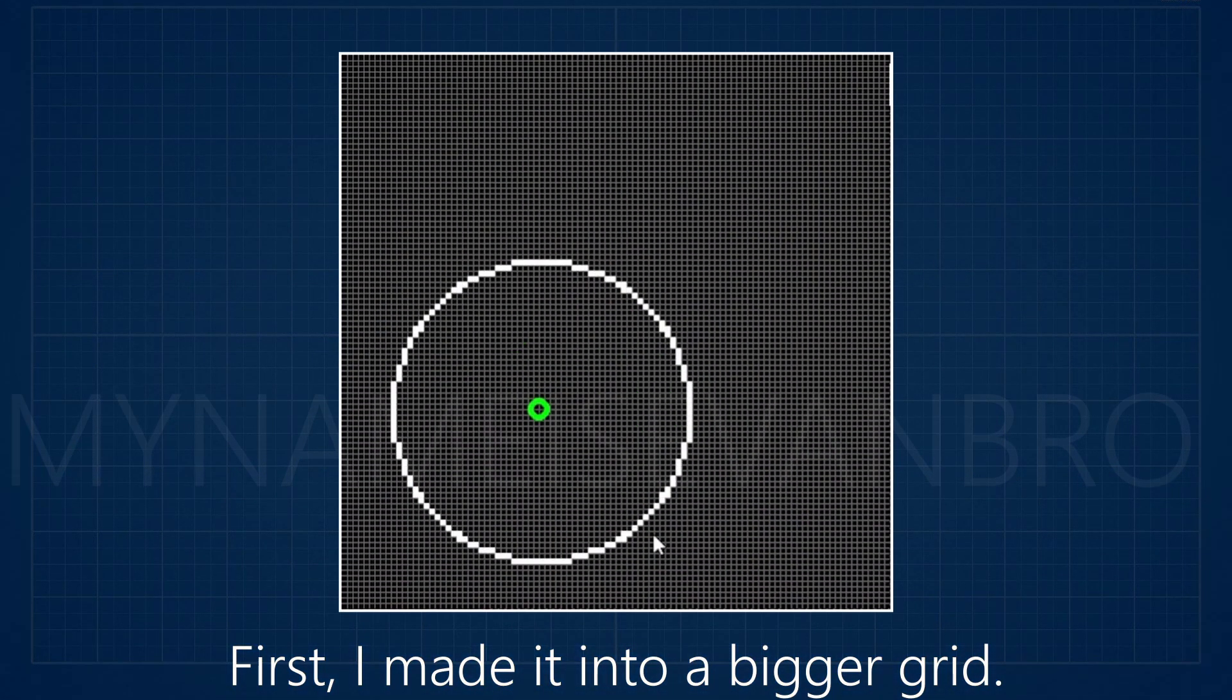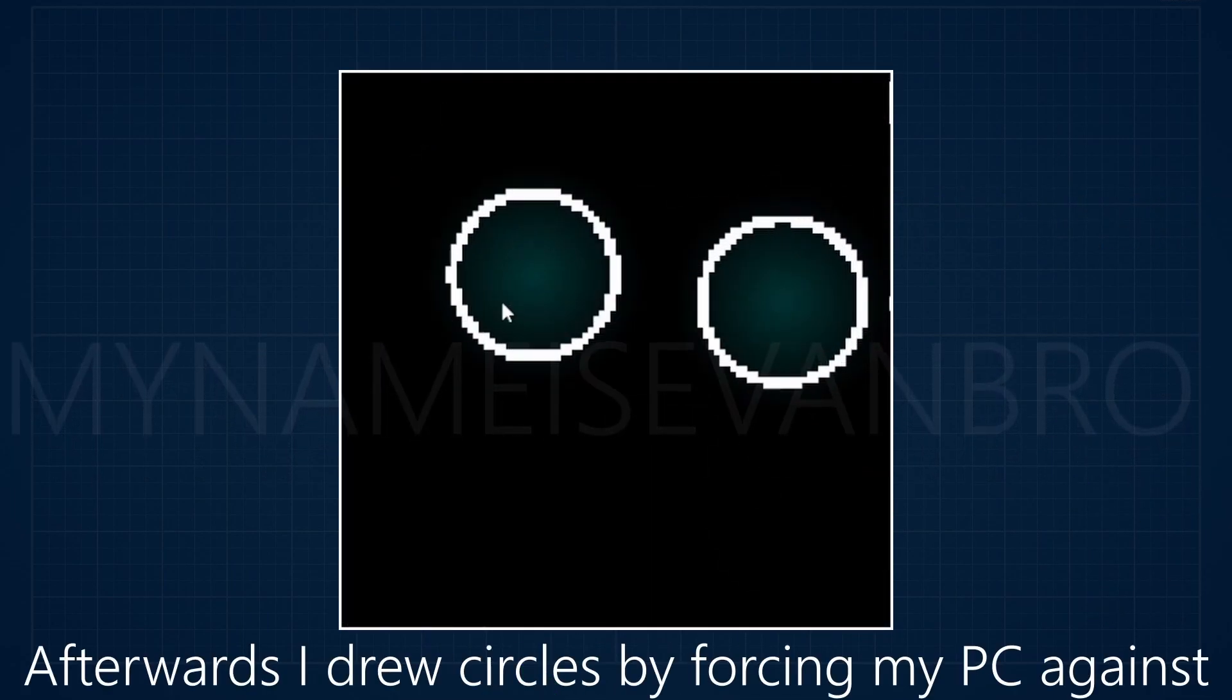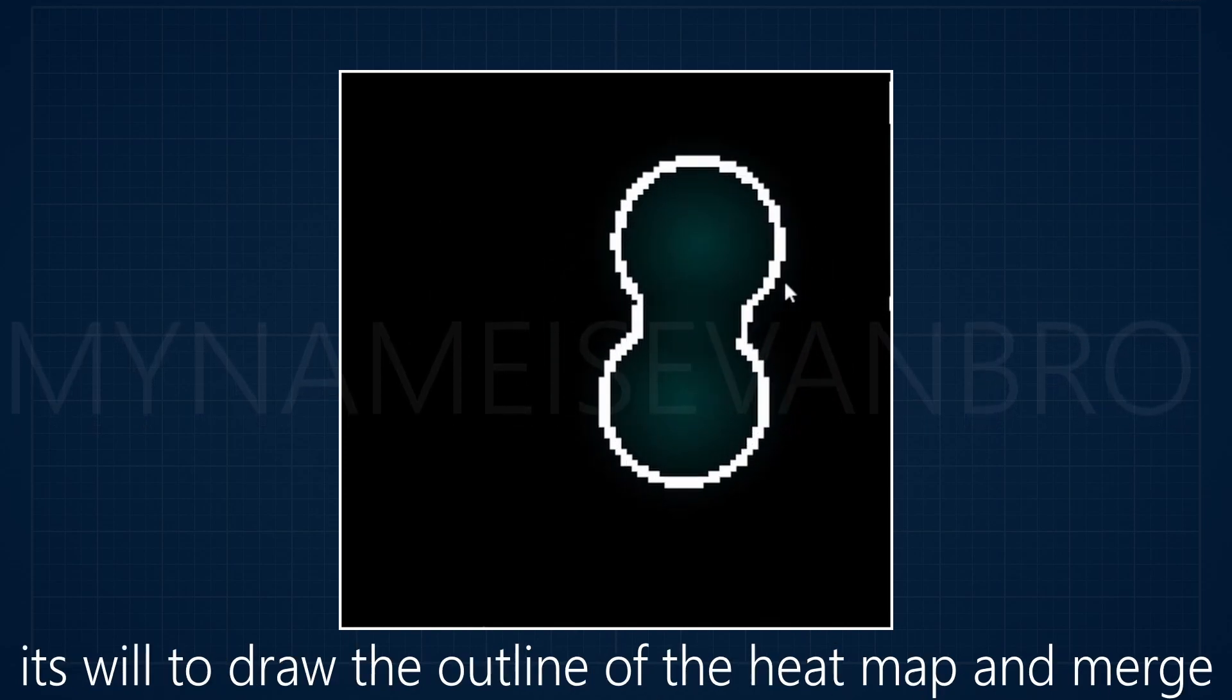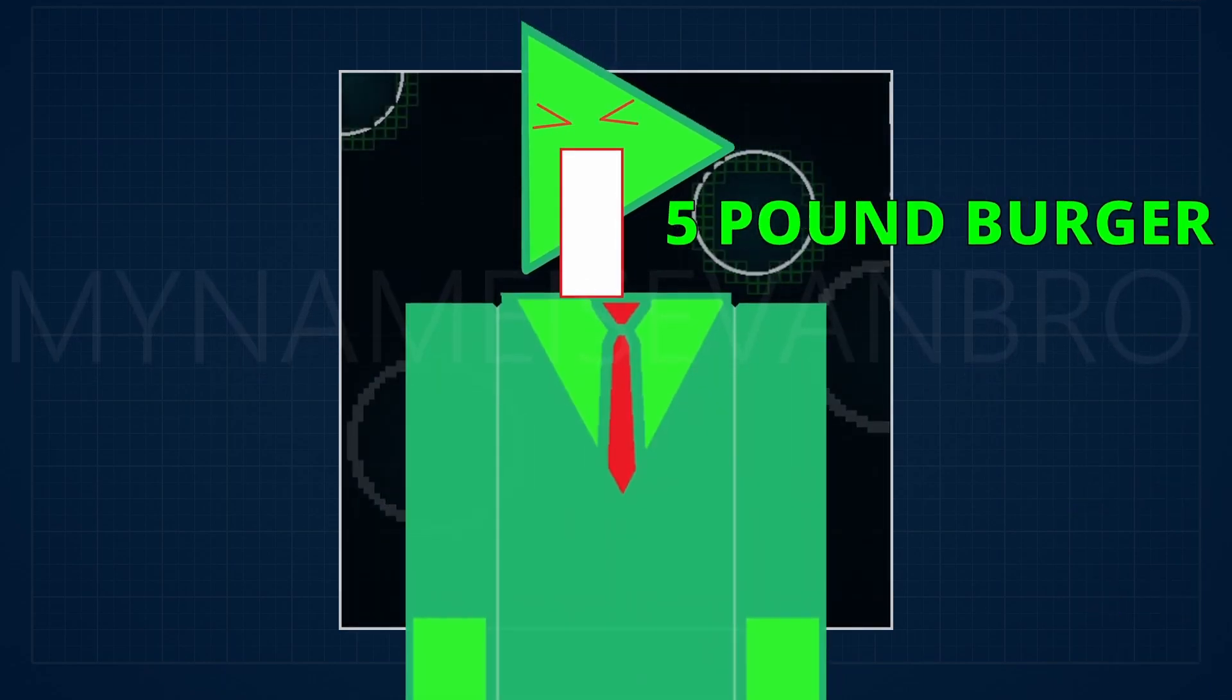Here's what I did. First, I made it into a bigger grid. Then I ate a 5 times grid. Afterwards, I drew circles by forcing my PC against its will to draw the outline of the heat map and merge the temperature using averages. Then I ate another 5 times grid.